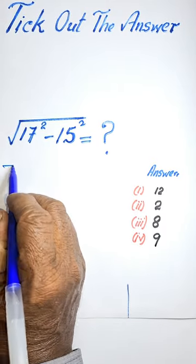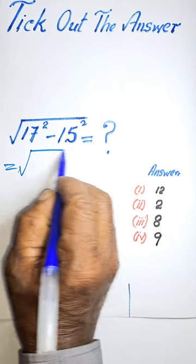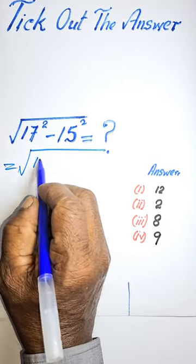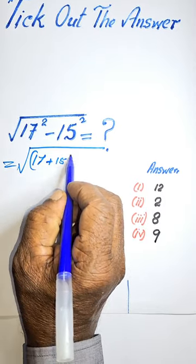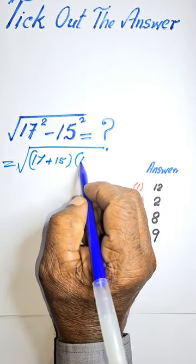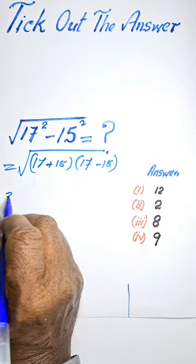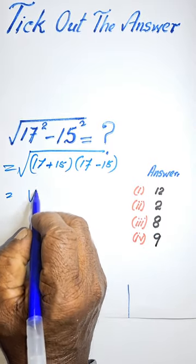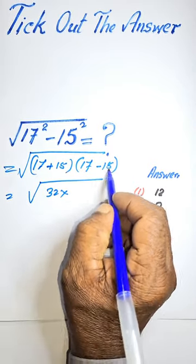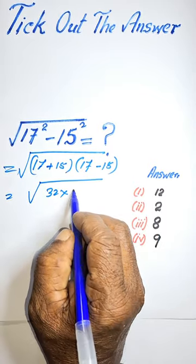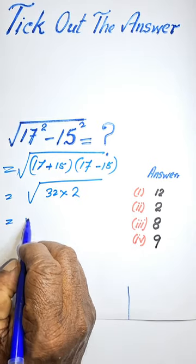For this problem, these are the difference of two squares, so you can write it as (17 + 15) into (17 − 15). Now 17 + 15 is 32, and 17 − 15 is 2, which gives 32 into 2 is 64.